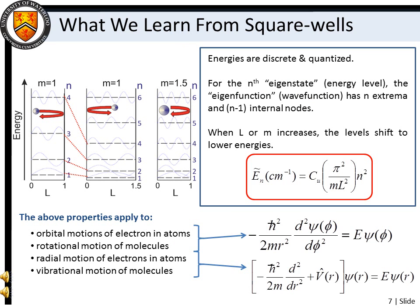The square well model, although very simple, teaches us some very important things about quantum theory. First, we see that energies are discrete, rather than continuous. We also see that like standing wave patterns, the n-th wave function has n extrema and n-1 internal nodes, or points where the wave function goes to zero. Furthermore, we find that as L and m increase, level energies decrease. So as particle mass and/or size approaches the bulk scale, quantum structure collapses into essentially an energy continuum. This, of course, is reminiscent of Niels Bohr's correspondence principle.